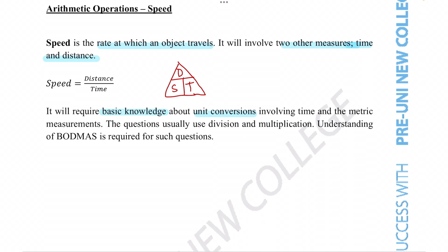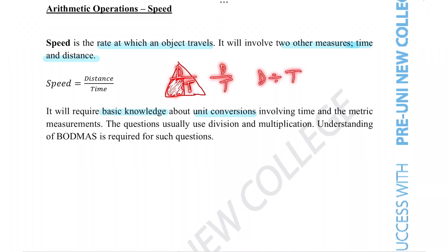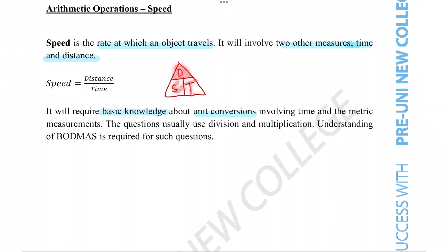This triangle tells you all the formulas you need to figure out distance, speed, or time. The way you use it is, for example, if you're looking for speed, you cross out S in the triangle. The remaining letters and their positions tell you the formula to use. In this case, you've got D over T, so you do distance divided by time to give you the speed. You can do that for any letter. If you wanted time, cross out T and you get distance divided by speed. If you wanted distance, cross it out and you get speed times time.